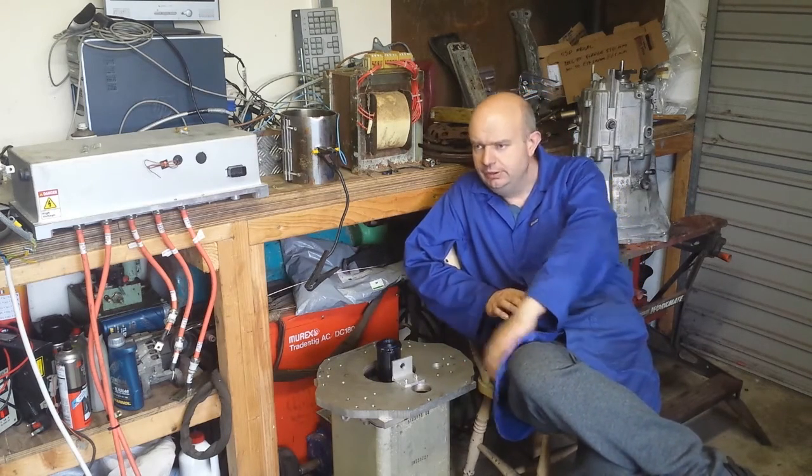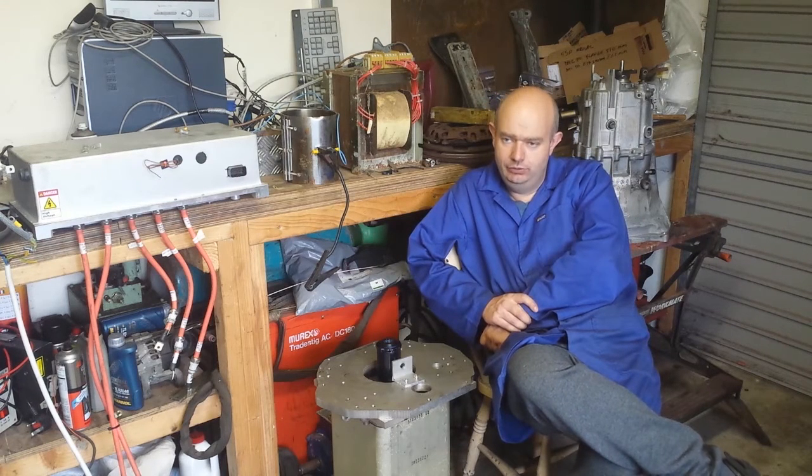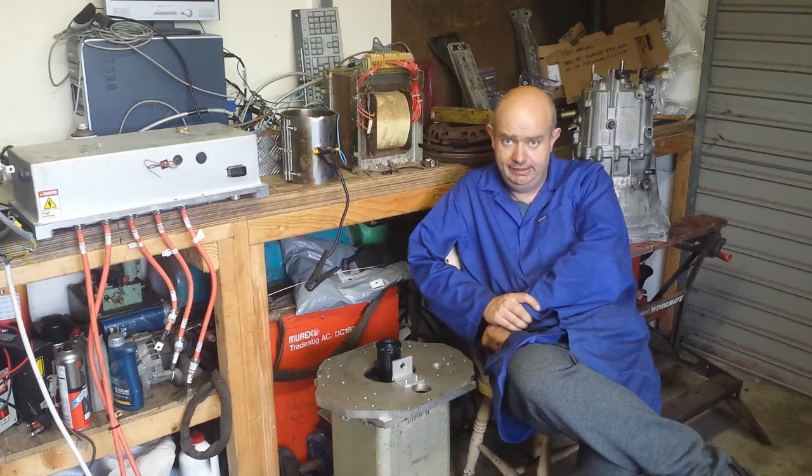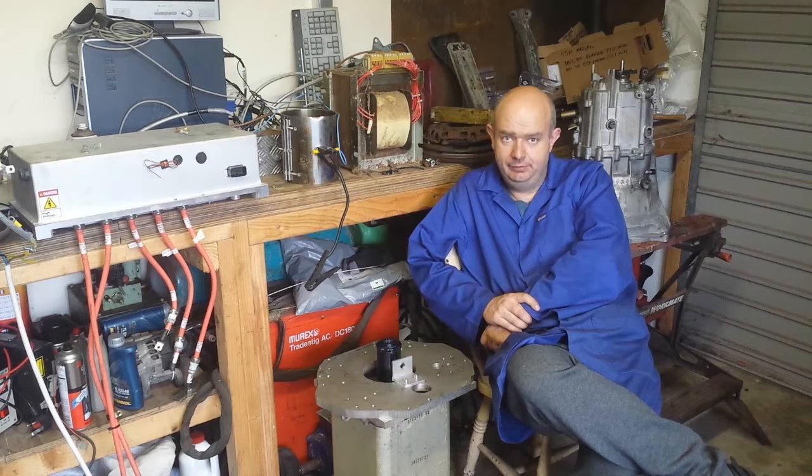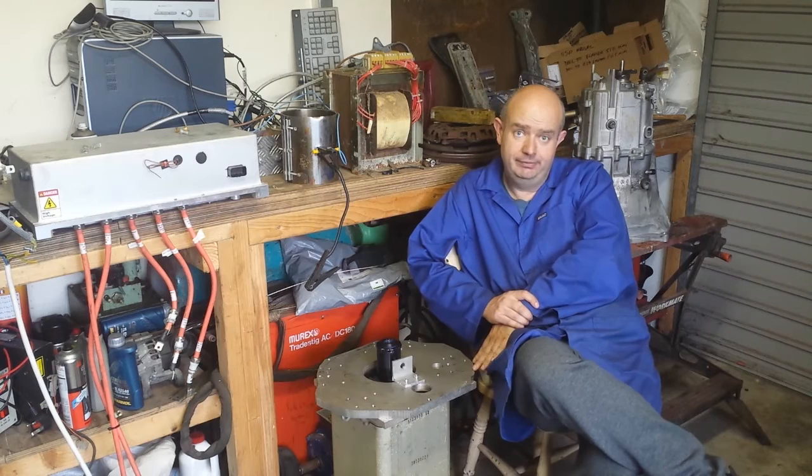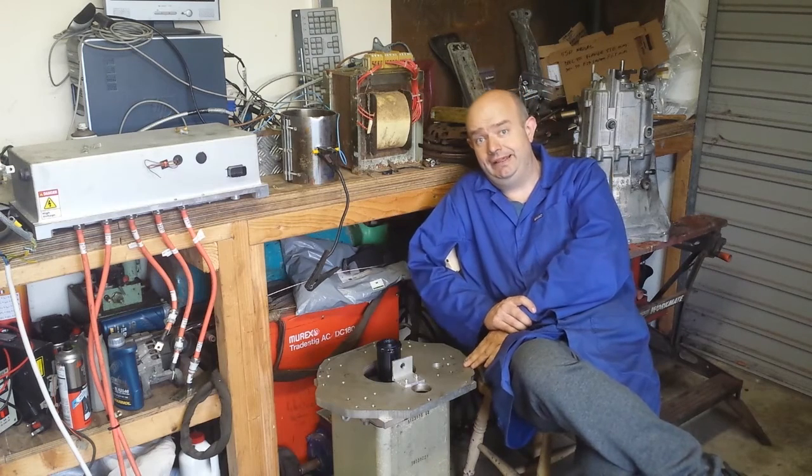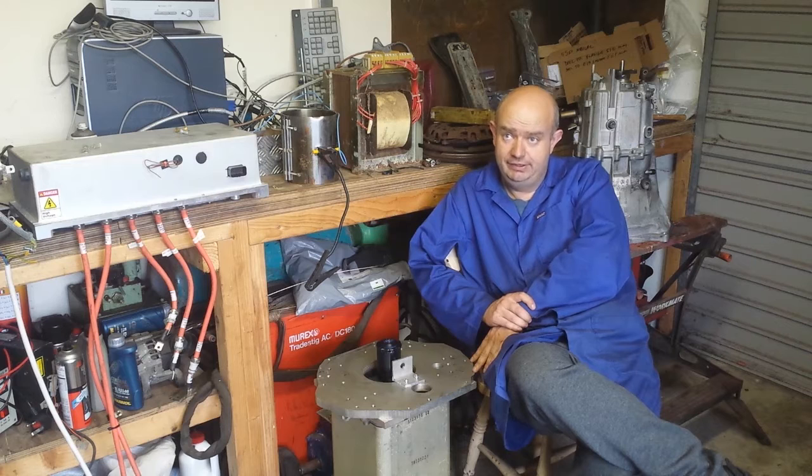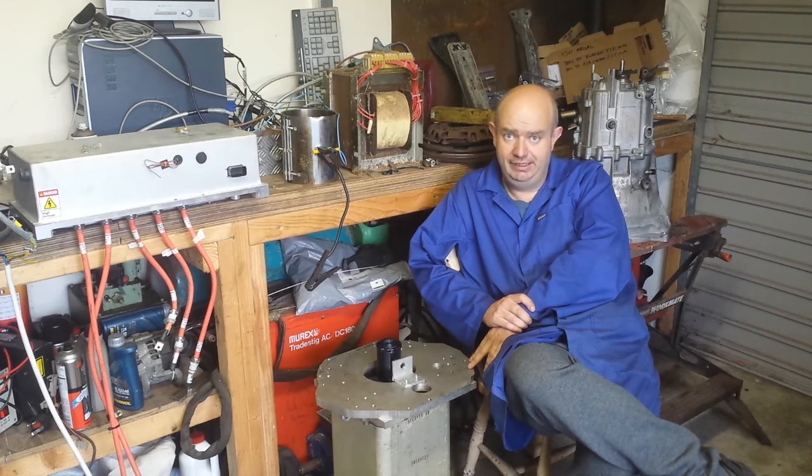Now I have built two DC powered clutchless manual EVs to date and both of those have shifted absolutely perfectly without the use of a clutch system. The E39, as you'll recall, has a big 13-inch series DC motor and uses the Getrag 5-speed manual gearbox from the inline-6 engine.